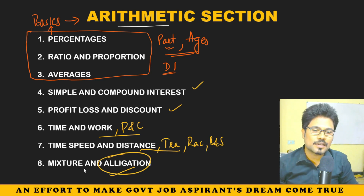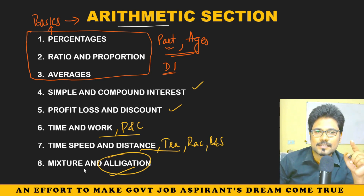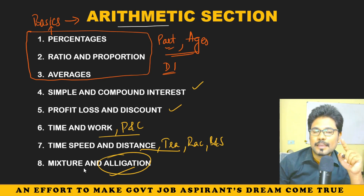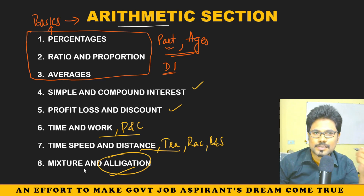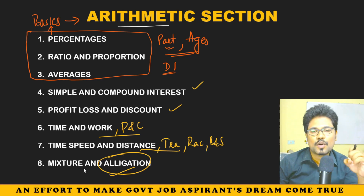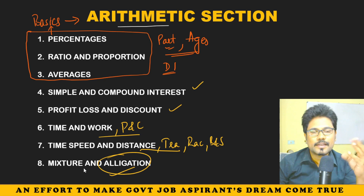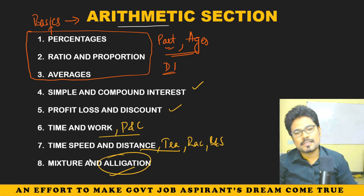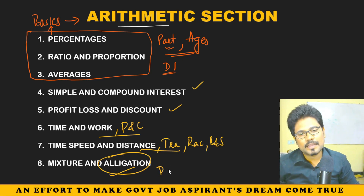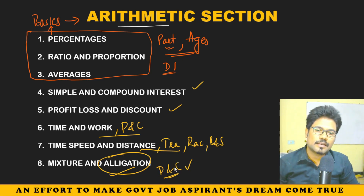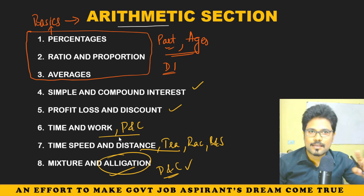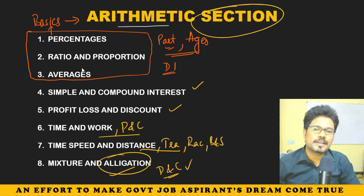Mixture and Allegation — comment in the comment box if this spelling is correct or not: A-L-L-I-G-A-T-I-O-N. The meaning is: mixing something — dealing mathematically with quantity and price related issues. When you mix quantities and find price and quantity relationships — that is called Allegation. Comment it.